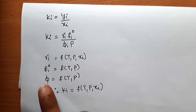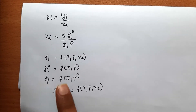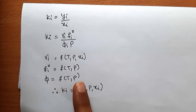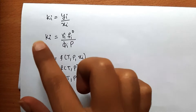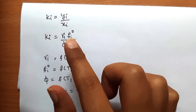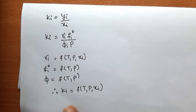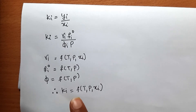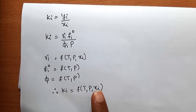φᵢ, the vapor phase fugacity coefficient, depends on temperature and pressure. Since Kᵢ is a function of all these parameters, Kᵢ depends on temperature, pressure, and liquid phase composition.